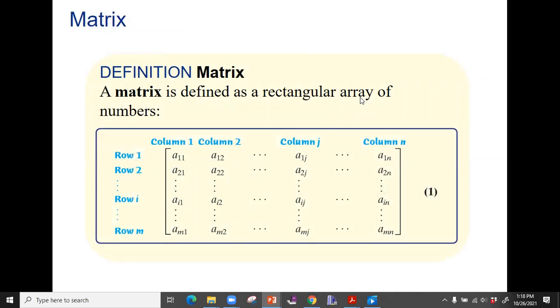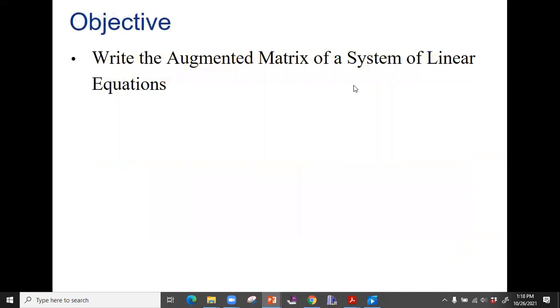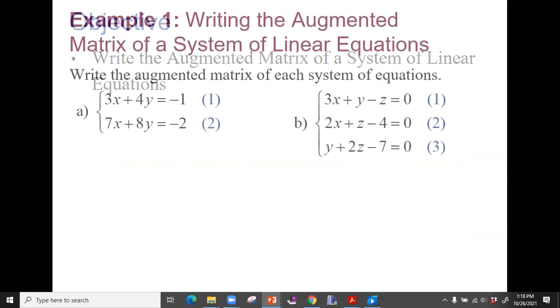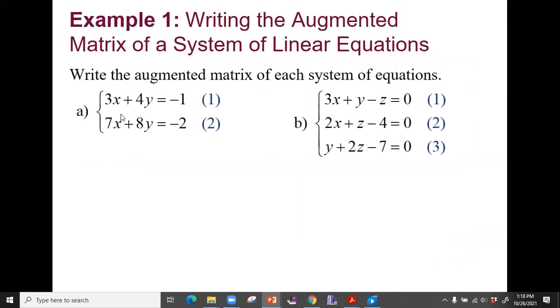Definition of a matrix is a rectangular array of numbers, only numbers. We eliminate variables and we're strictly focused on working on the numbers. So how do I write a system as a matrix? Here we have two examples, a two-variable system and a three-variable system. First and foremost, when you're writing a system as a matrix, you want all of your variables on one side.